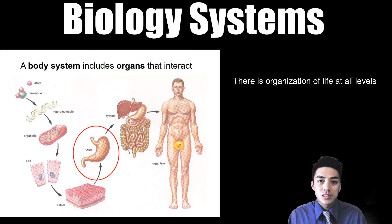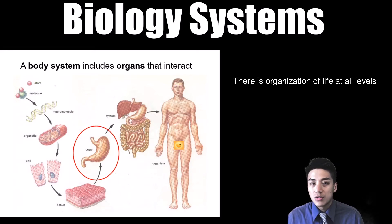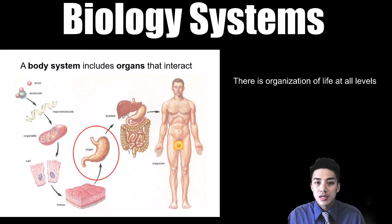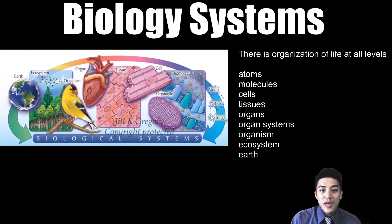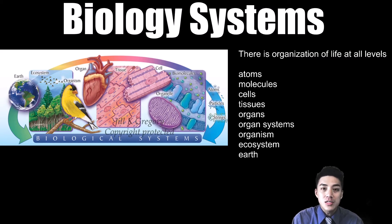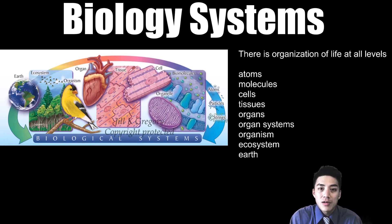You start with the smallest, which is the atom. Atoms make up molecules. Molecules make up macromolecules. Those go on to make organelles. Organelles organize into cells. Cells make up tissues. Tissues make up organs. Organs make up organ systems. And when you have an organ system all working together, you have an organism. You can expand upon this even further — you can see how that organism interacts with all the other species in an ecosystem, and then you have many ecosystems combining to form biospheres, and then biospheres make up our earth.